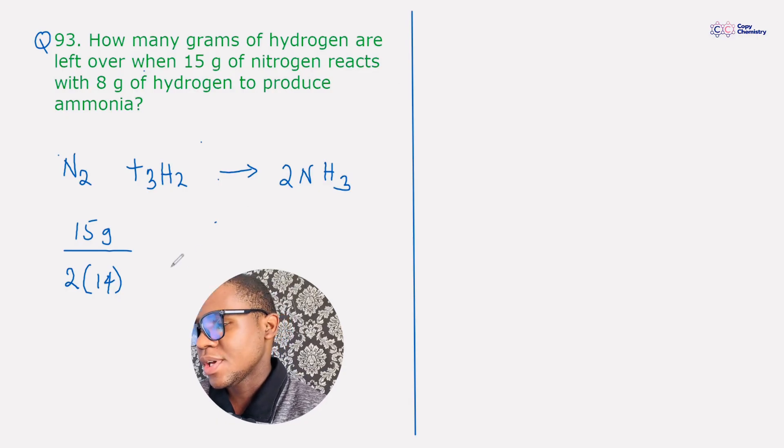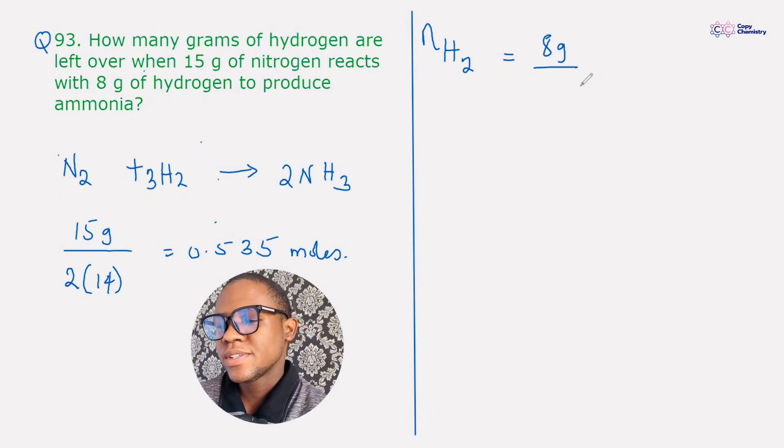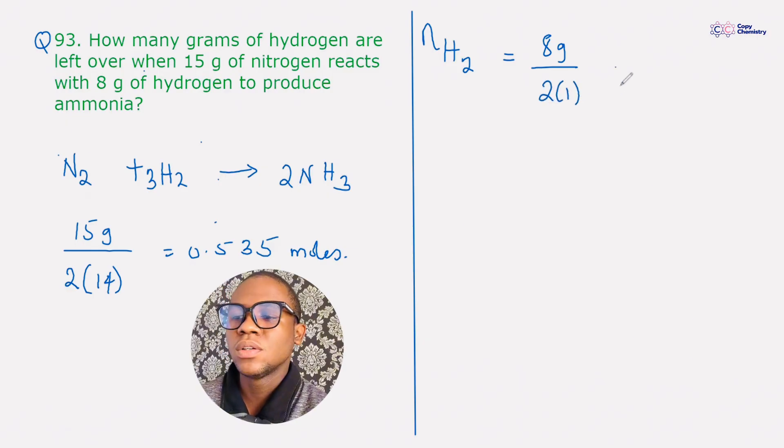Okay, then what amount of oxygen do we have? 8 grams. Okay, let's just find out what that would be. Did I say oxygen again? I meant hydrogen. So hydrogen, the number of moles of hydrogen is the mass of hydrogen, which is 8 grams, divided by the molar mass of hydrogen, which is 2 multiplied by 1, and that just gives us 4 moles.